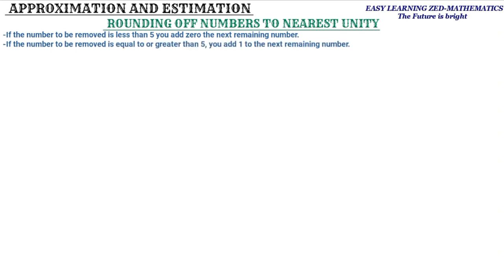The second rule is: if the number to be removed is equal to or greater than 5, you add one to the next remaining number. So when it's less than five you add zero, and when it's five or any number greater than five you add one to the next remaining number.